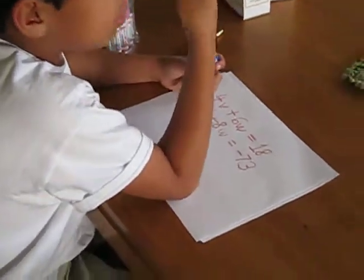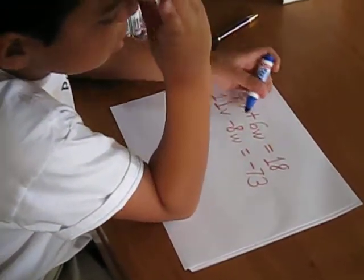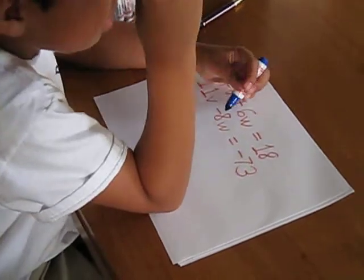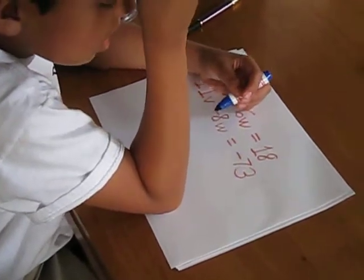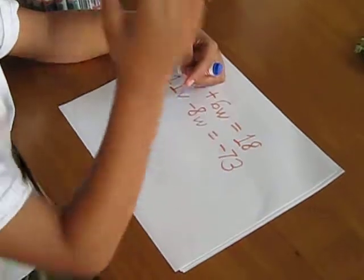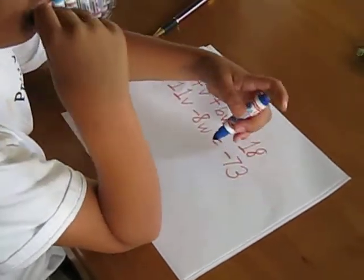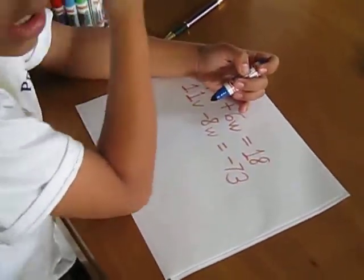You can multiply equation 1 by 8 because there are 8 w's in the second, and multiply equation 2 by 6 because there are 6 w's in the first.